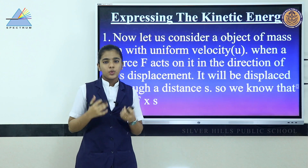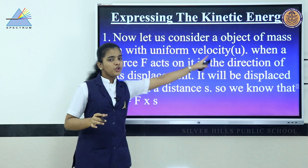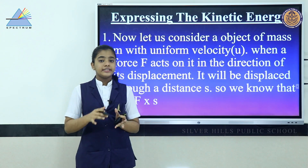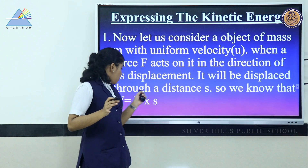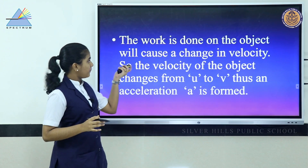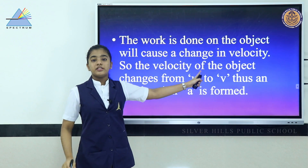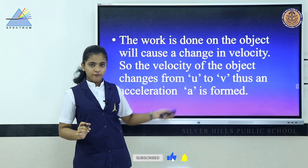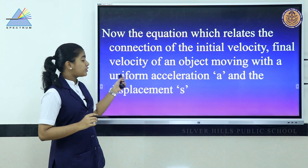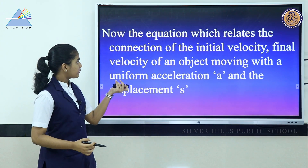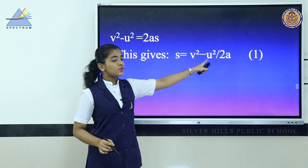Let us derive the equation for kinetic energy. Consider an object of mass m moving with a uniform initial velocity u. A force F acts on it in the direction of its displacement s. Work done equals force times displacement. When work done causes a change in velocity from u to a final velocity v, there is an acceleration a. Using the kinematic equation: v² − u² = 2as, we get s = (v² − u²) / 2a.